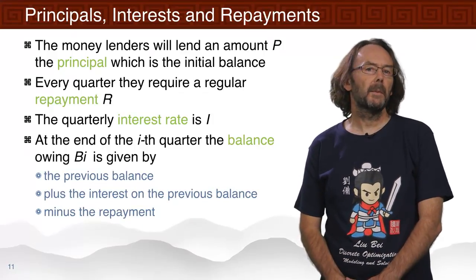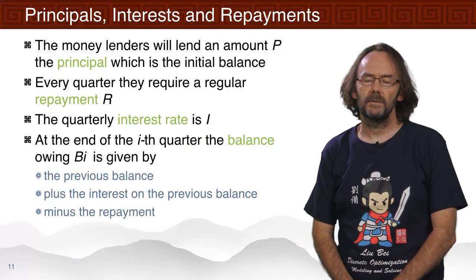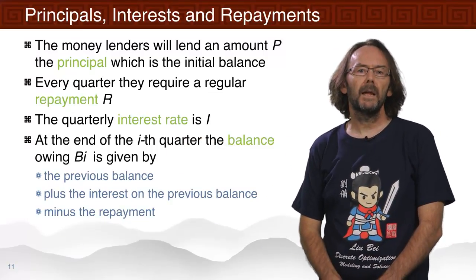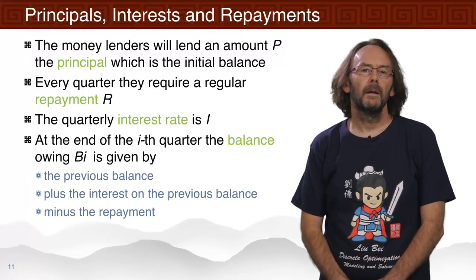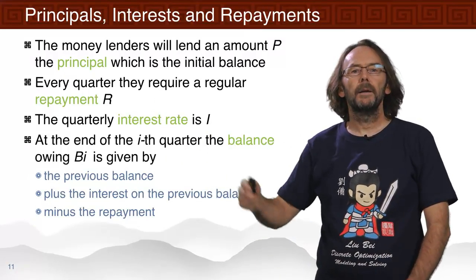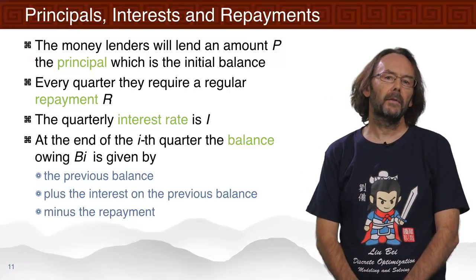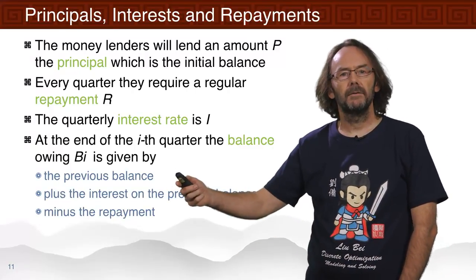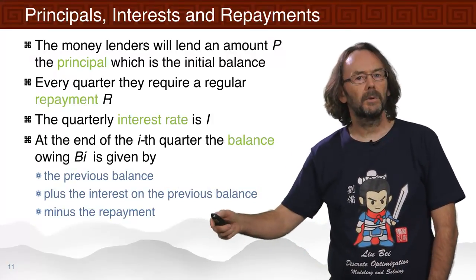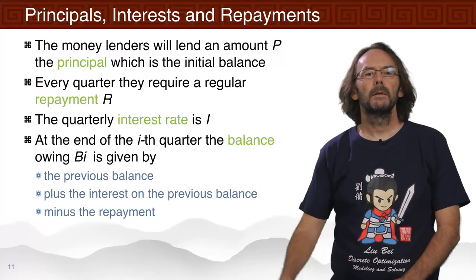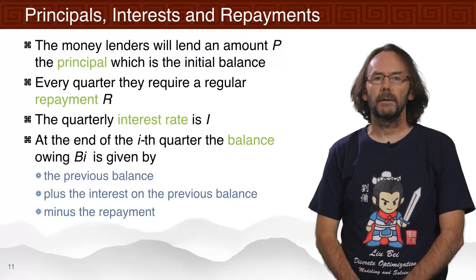Let's look at how the loan works. The moneylender lends them an amount called the principal P. They make a regular repayment R, and there's a quarterly interest rate I. At the end of the i-th quarter, the balance B_i is given by the previous balance, plus the interest on the previous balance, minus the repayment. Let's look at a MiniZinc model for this.